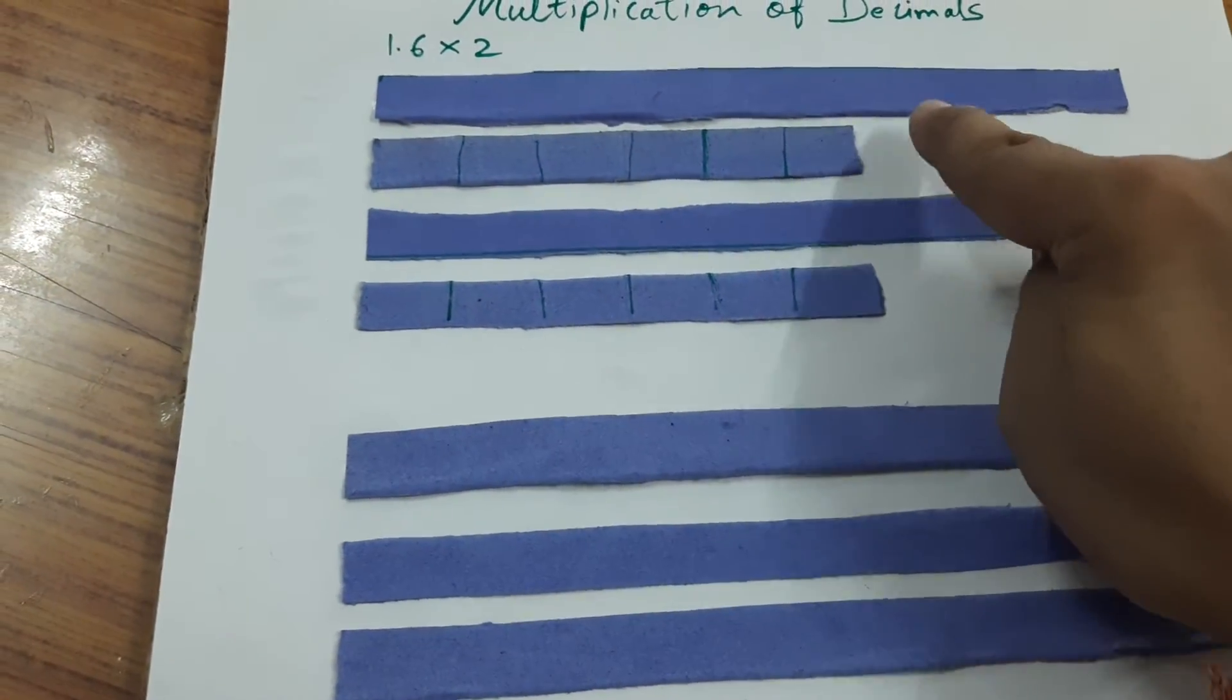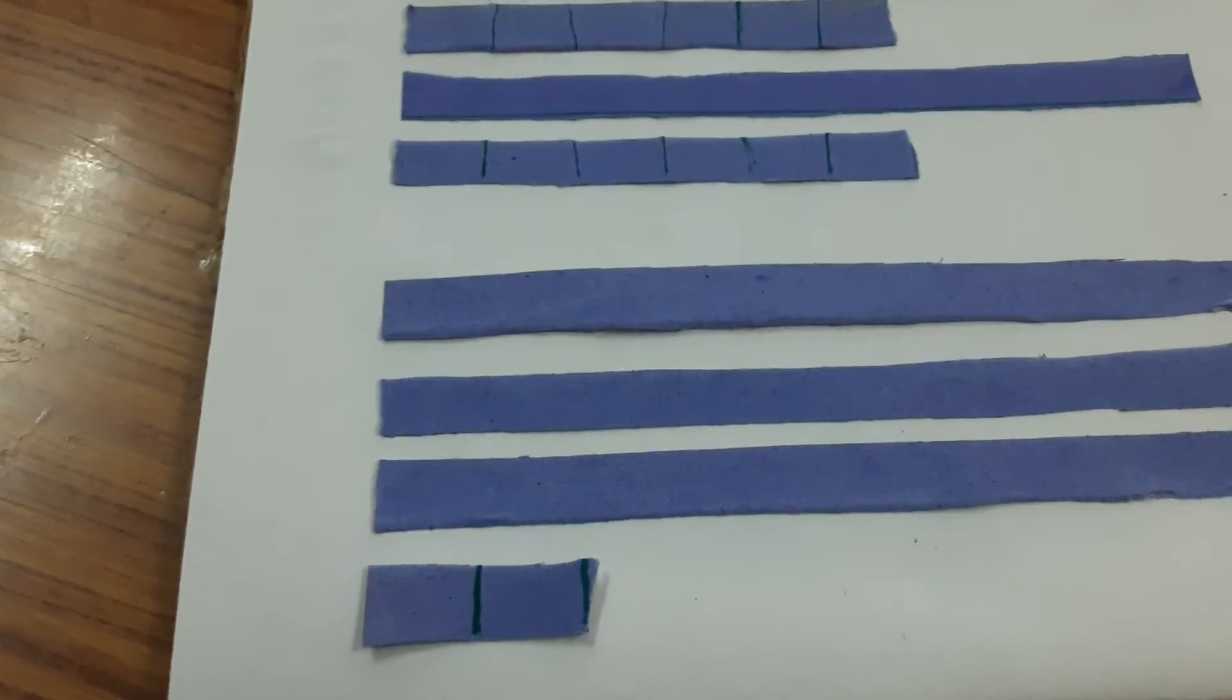From this 0.6, 4 will come here and 2 will be remaining there.